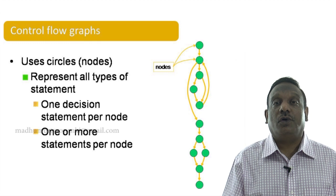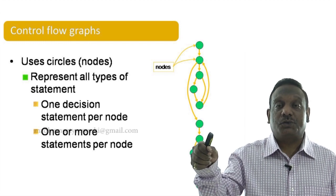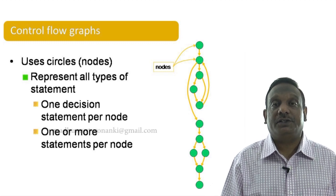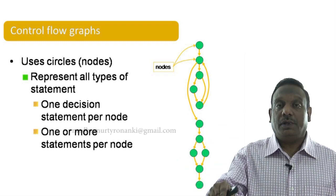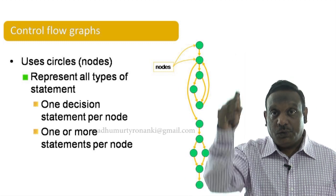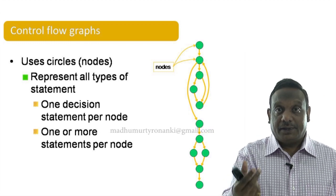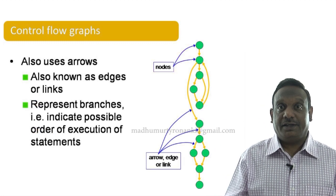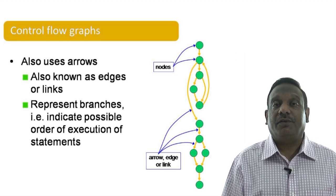In source code, you will use loops such as 'for this to this do,' or 'repeat the same thing until a condition is met,' or 'while a condition do this.' All these are called loops. You will be representing both sequential statements and decision statements in these circles — the nodes. All the lines connecting circles to other circles, depicting the flow of execution, are called arrows, edges, or links — most frequently we call them edges. They represent branches indicating the possible order of execution of statements.